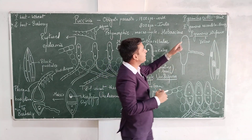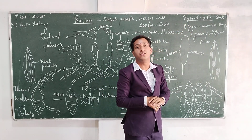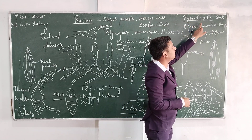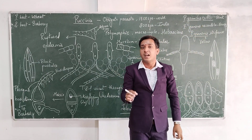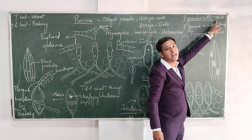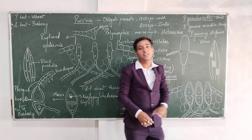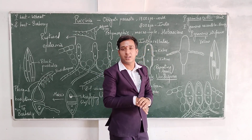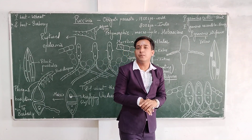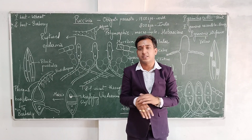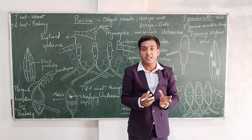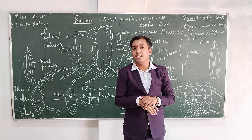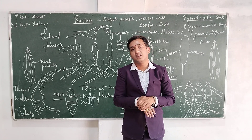As far as species are concerned, Puccinia graminis causes infection in wheat and causes a disease called black rust. Brown rust is caused by Puccinia graminis recondita, and yellow rust is caused by Puccinia graminis striiformis. Additionally, Puccinia avenae causes infection in oat, Puccinia secalis causes infection in rye, and Puccinia poae causes infection in poa grass.